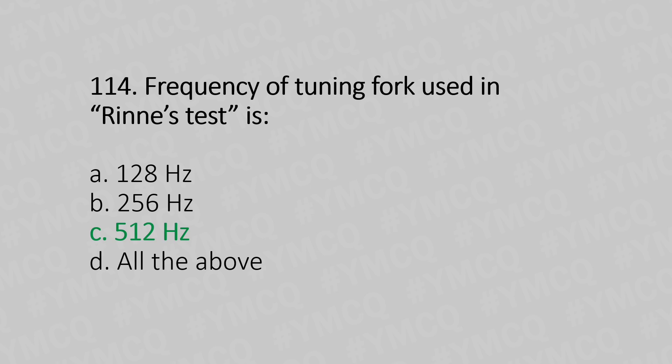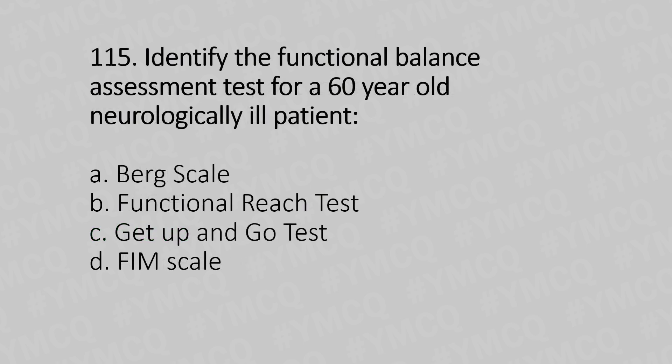Now let's move to question number 115. Identify the functional balance assessment test for a 60-year-old neurology outpatient. Option A, Berg scale. Option B, functional reach test. Option C, get up and go test. Option D, FILM scale. And the answer is Option C, get up and go test.